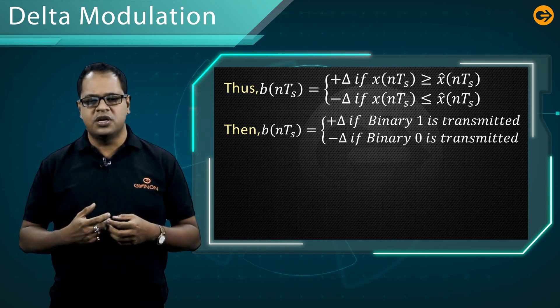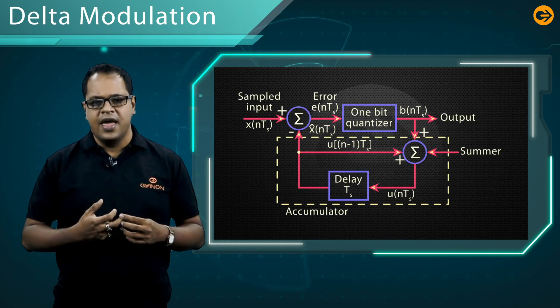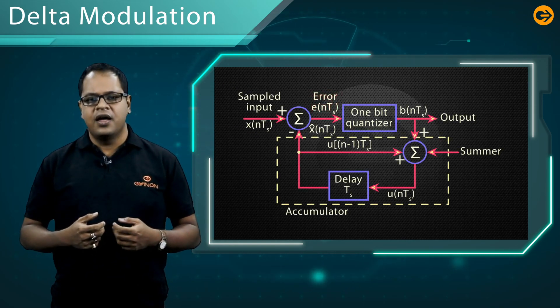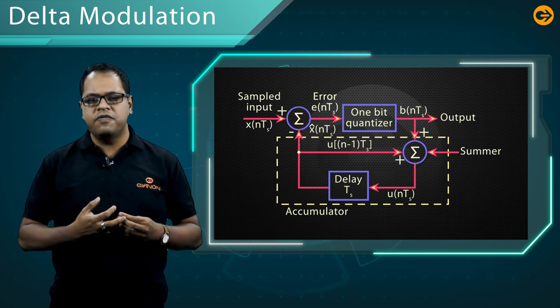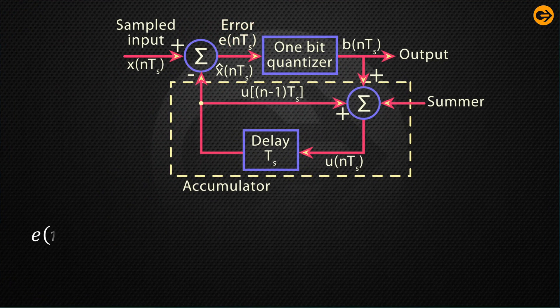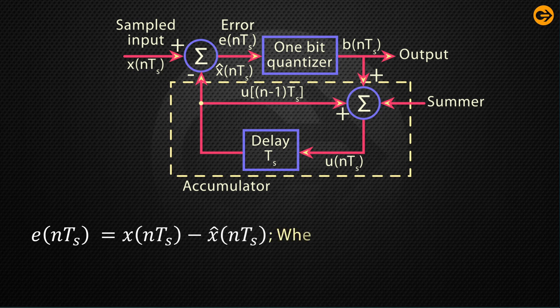Now let us discuss the delta modulation transmitter. The error signal is generated by the summer block, and its output is e(nTs) = x(nTs) minus x̂(nTs). Ts is the sampling time. This output is quantized by a one-bit quantizer and the delta modulated signal b(nTs) is generated.